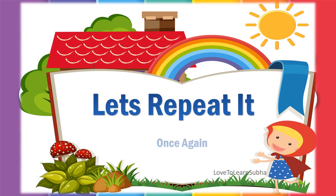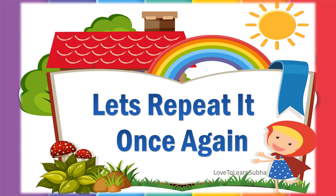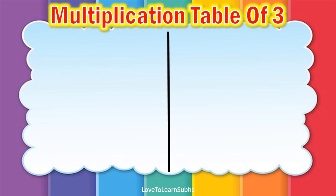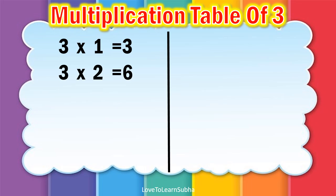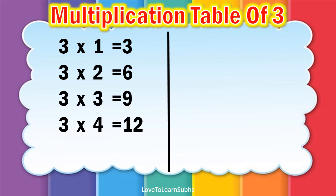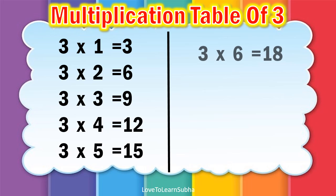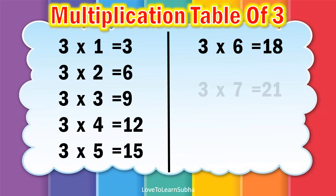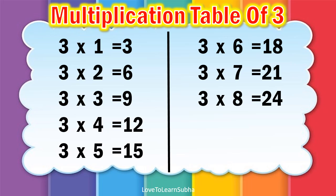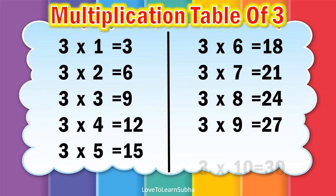Now, let's repeat it once again. 3 1s are 3, 3 2s are 6, 3 3s are 9, 3 4s are 12, 3 5s are 15, 3 6s are 18, 3 7s are 21, 3 8s are 24, 3 9s are 27, 3 10s are 30.